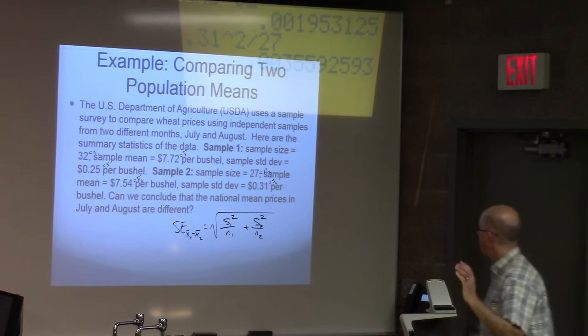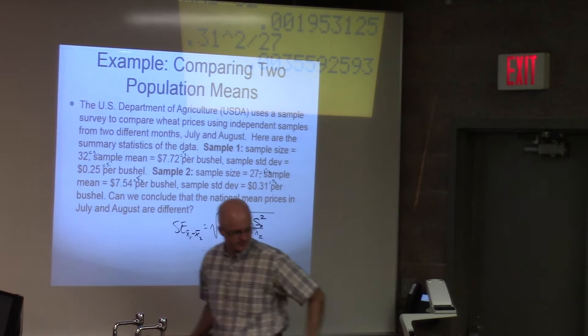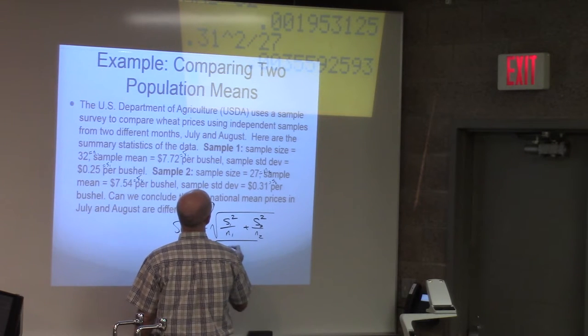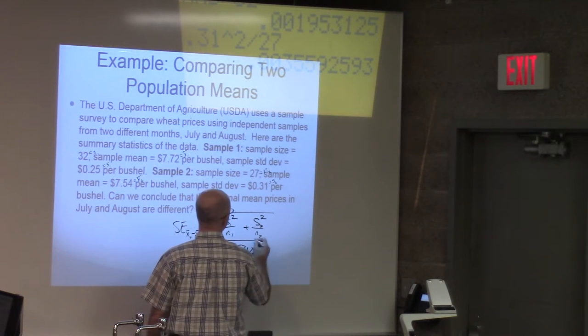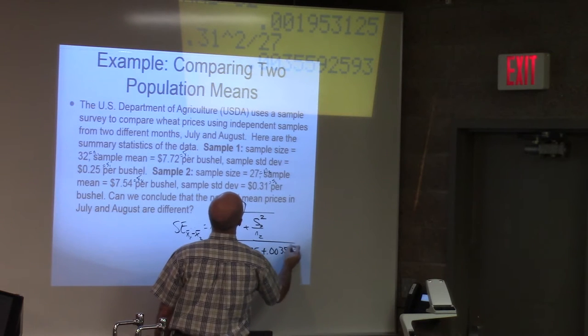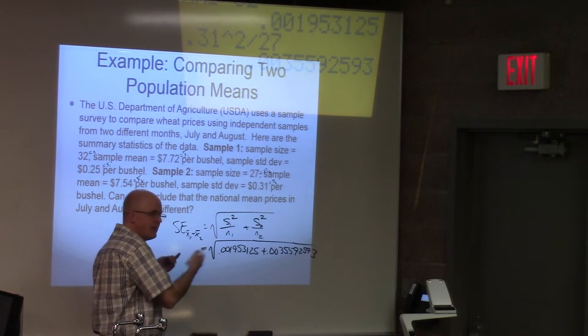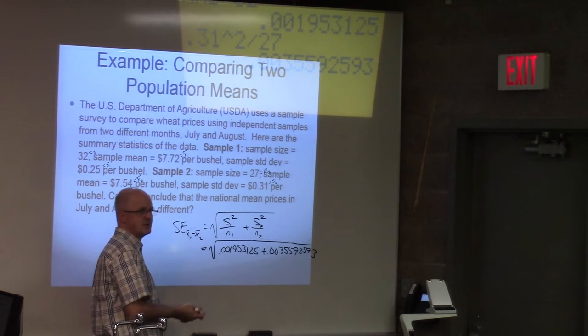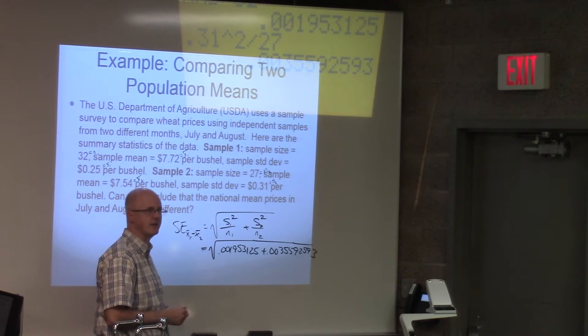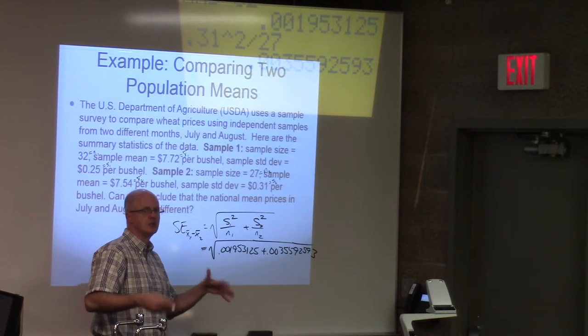Do the same kind of thing for S2 squared and divide it by N2. I guess I will go ahead and do that all at once here. 0.31 squared divided by 27. At a minimum, you should show those two numbers as what you're adding underneath the square root.